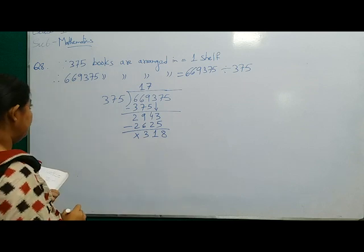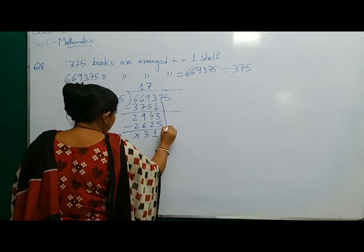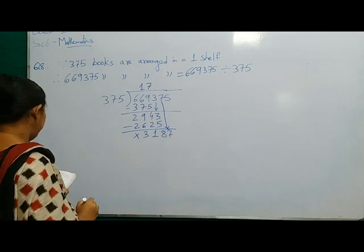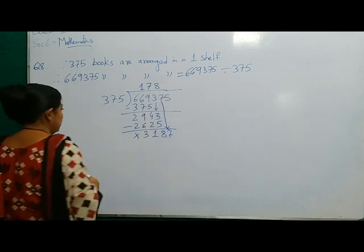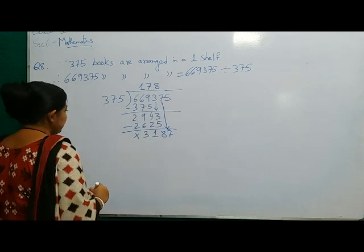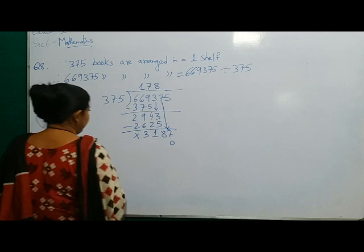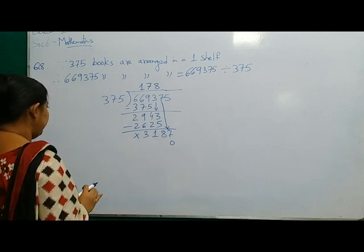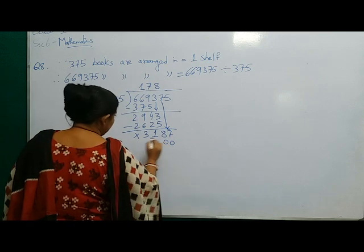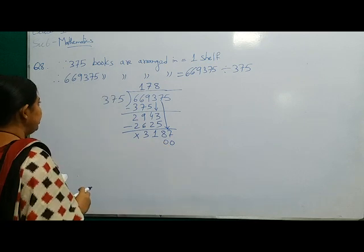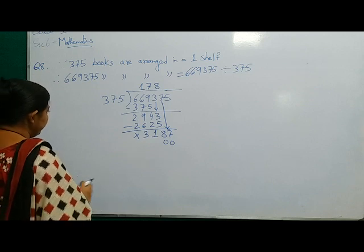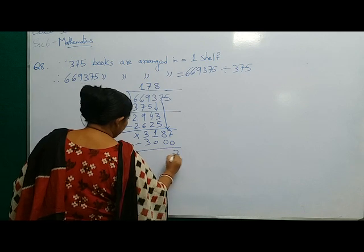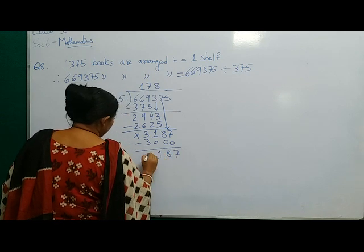Now this 7 will come down. Again 375 into 8. 8 times 5 are 40 carry 4, 8 times 7 are 56, 57, 58, 59, 60 carry 6, 8 times 3 are 24, 25, 26, 27, 28, 29 and 30. Subtraction will give you 1 and 3 minus 3 is 0.